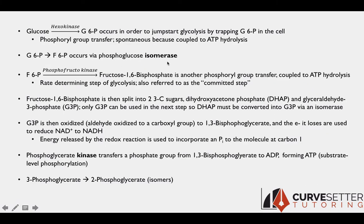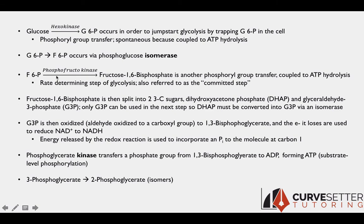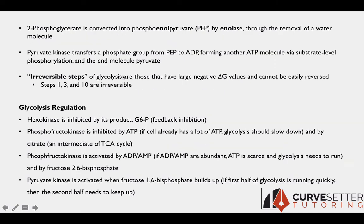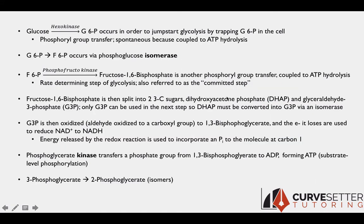The next step is just an isomerization — we turn glucose, which is a six-membered ring, into fructose, which is a five-membered ring, via phosphoglucose isomerase. The step after that, fructose-6-phosphate, is phosphorylated at carbon number one. It already has a phosphate group at carbon number six, and it gets phosphorylated at carbon number one — another phosphoryl group transfer requiring ATP.